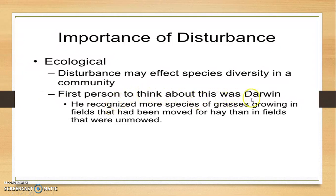First person you have to think about this was Darwin. So Darwin and Lamarck, they are having the key role in the ecology and evolution part. He recognized more species of grasses growing in the field that had been moved for hay than in the field that was unmoved.